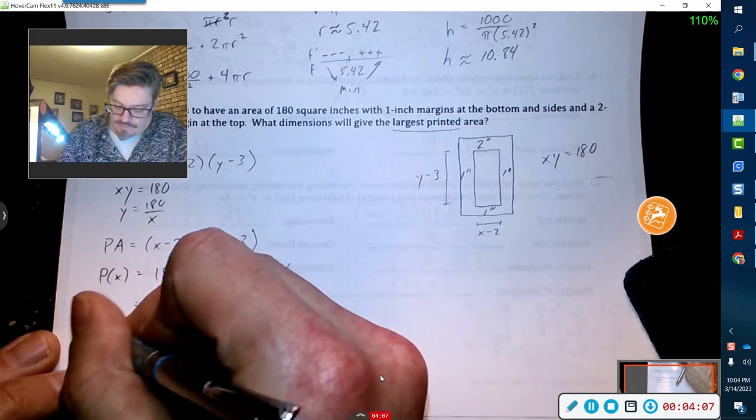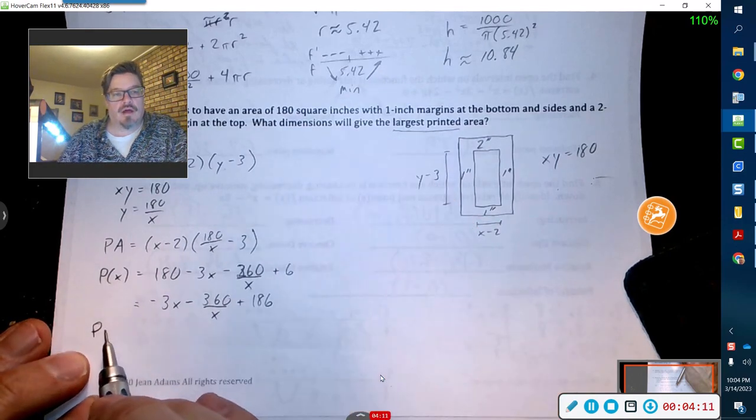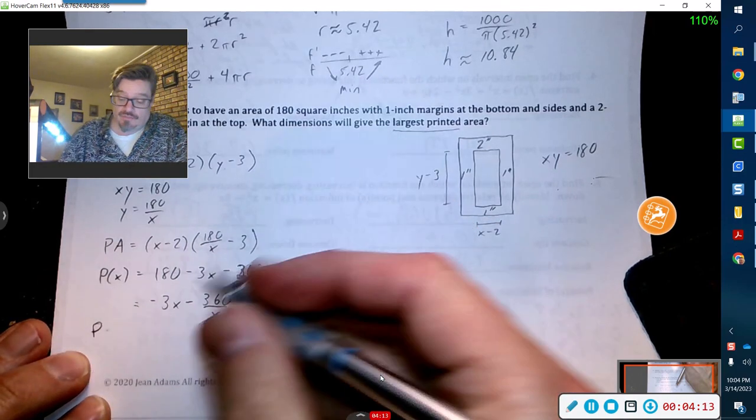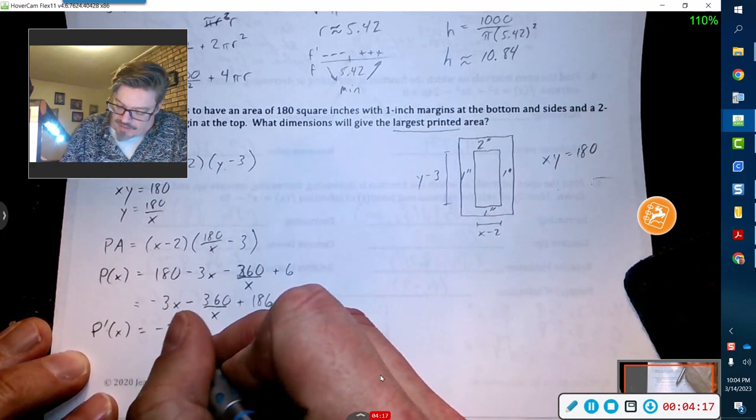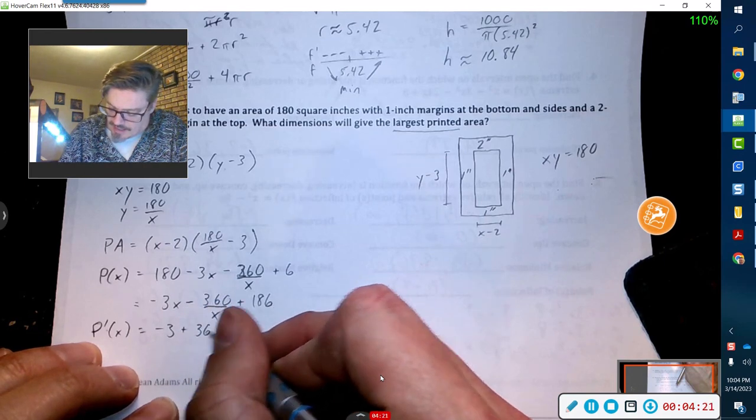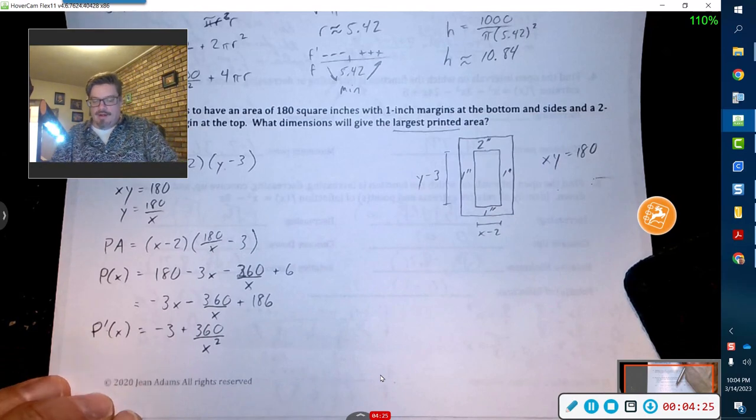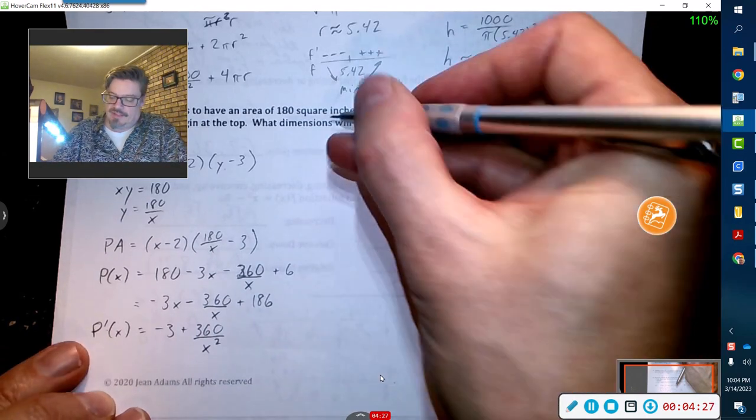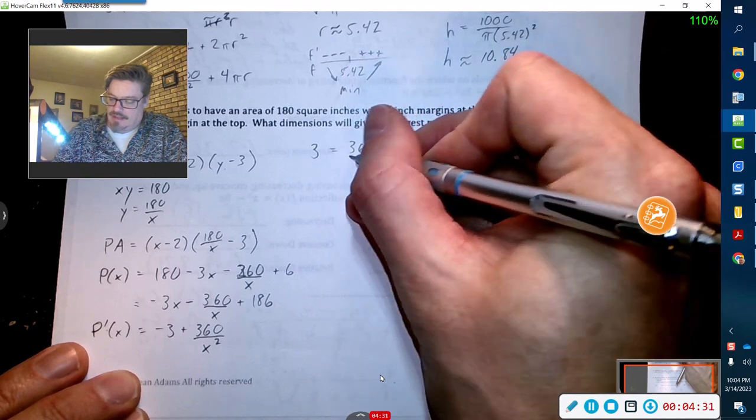I've got a function in terms of x now. So what I'm going to do is take the derivative, because my max and min have to happen when the derivative is zero. That's negative 3, then this will become positive 360 over x squared.